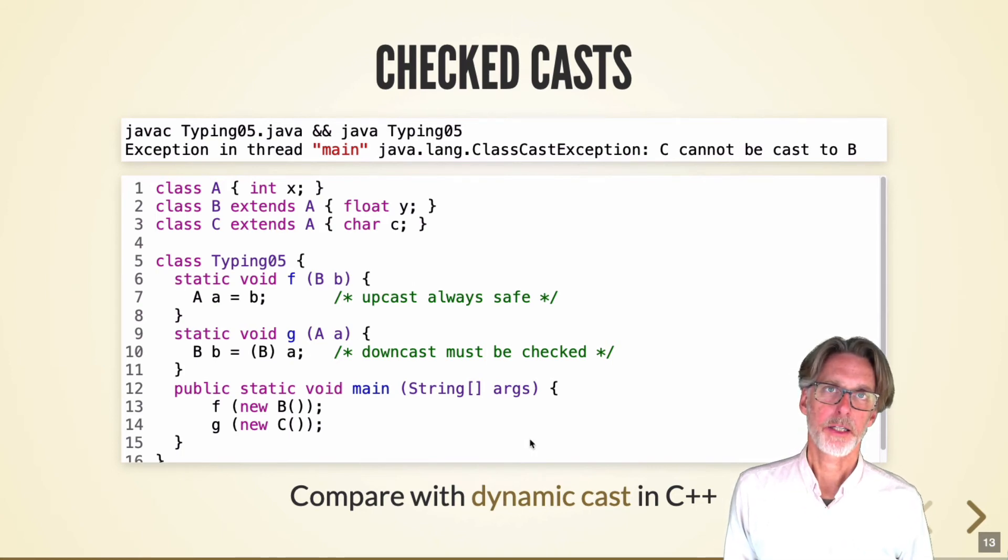Casts in C++ are like casts in C by default. And in order to get this kind of checked behavior, you have to use some fancy wizardry that was added into the language later. These are called dynamic casts, which you can look at here.